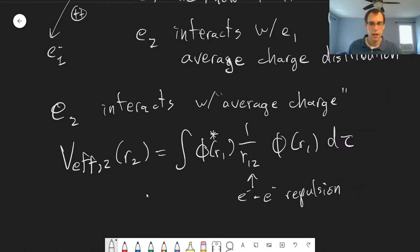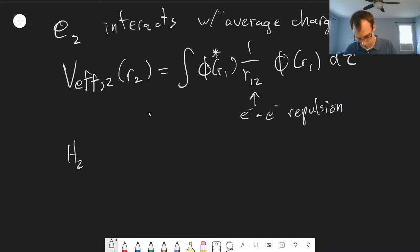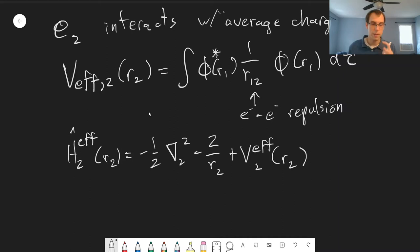So then we can define a Hamiltonian for electron two, an effective Hamiltonian, based on this effective potential energy. That'll be our kinetic energy term for electron two, minus our attraction with the nucleus, plus this effective potential energy term that's based on this average interaction with electron one. Then we can solve our Schrodinger equation for electron two. This effective Hamiltonian phi(R2) will give us some energy based on R2.